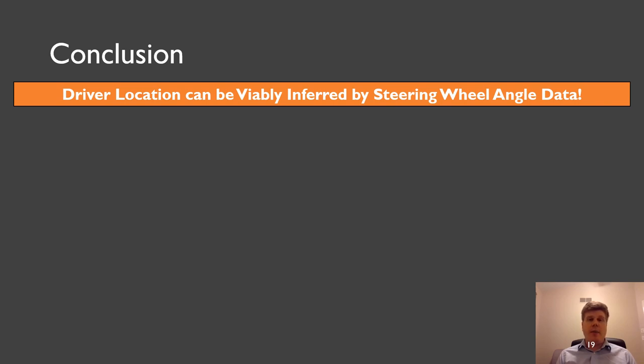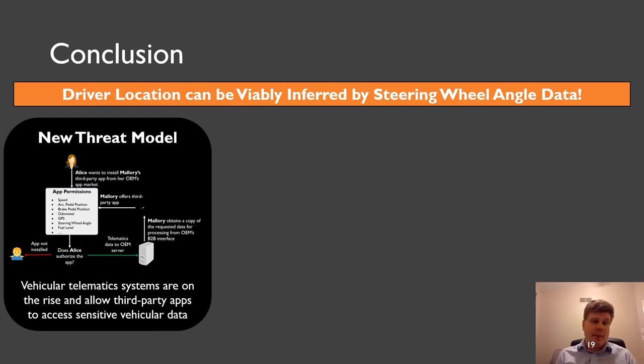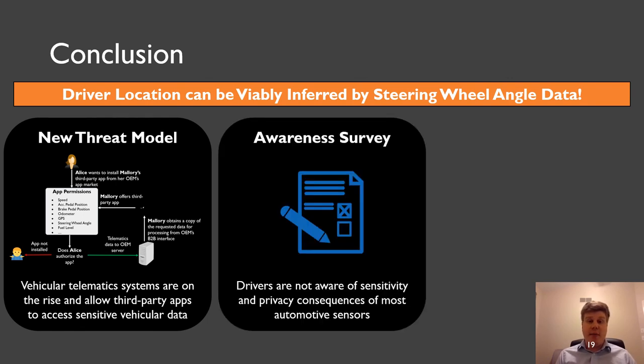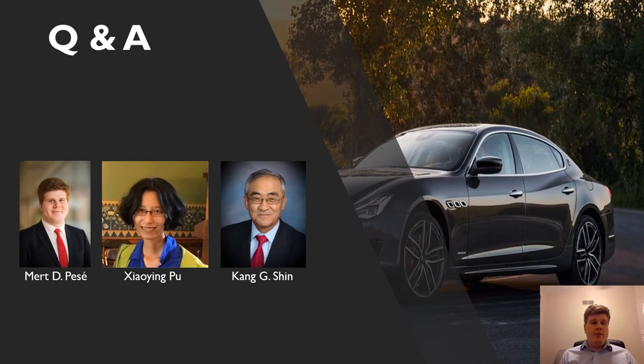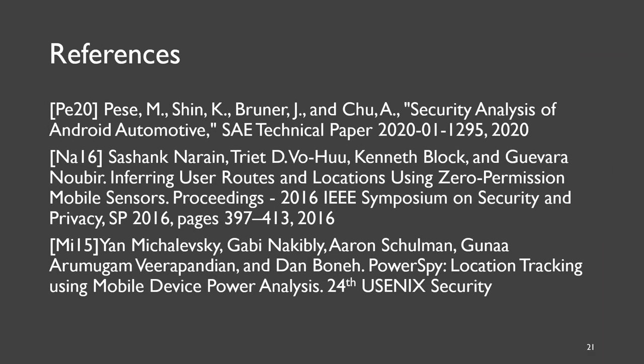And now let's finally conclude this work. So in this work, we showed that driver location can be viably inferred by steering wheel angle data. And we introduced a new threat model since vehicular telematic systems are on the rise and they allow third party apps to access sensitive vehicular data. So threat is real. We conducted an awareness survey where we showed that drivers are not really aware of the sensitivity and privacy consequences of most automotive sensors. And finally, we showed that RAKUMA offers better performance than all service related work. I want to thank you. This is the end of my talk. I met PZ and I want to thank you. I want to thank Shaoying and my advisor, Professor Shen. Thank you.